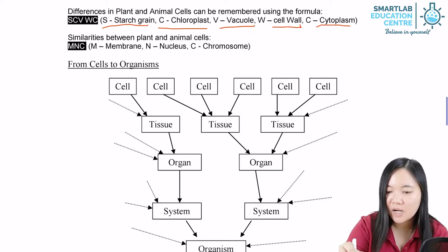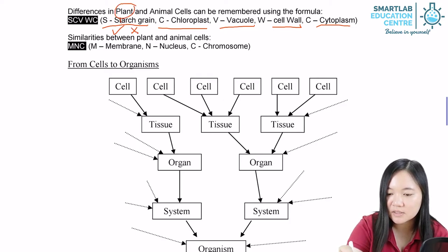Starch grain. Plant cells have starch grain. Animal cells do not. Based on this, this is plant, this is animal.